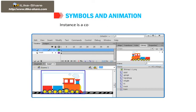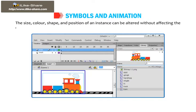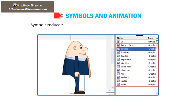An instance is a copy of the original symbol. The size, color, shape, and position of an instance can be altered without affecting the original symbol. Symbols reduce the file size and simplify the editing process of a movie.